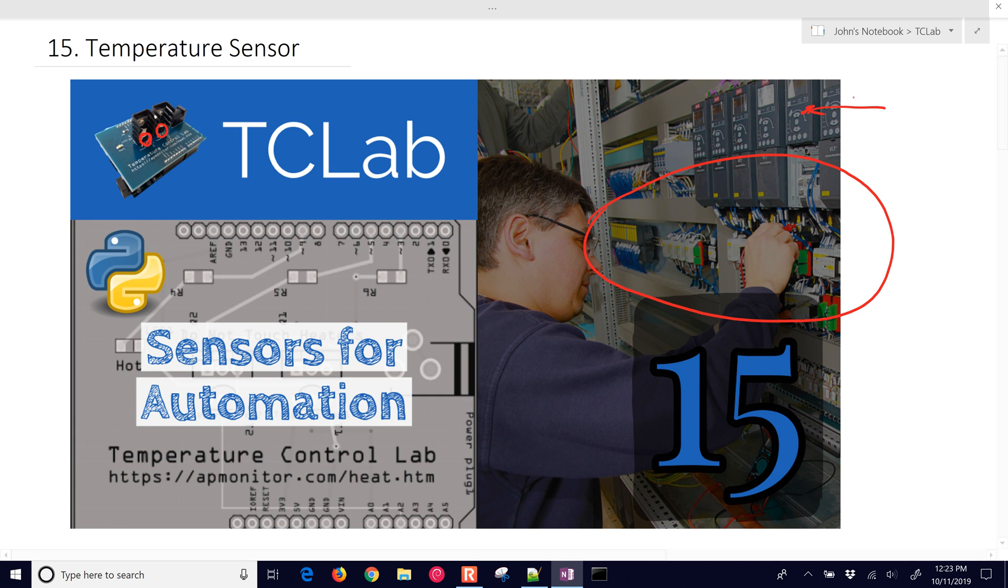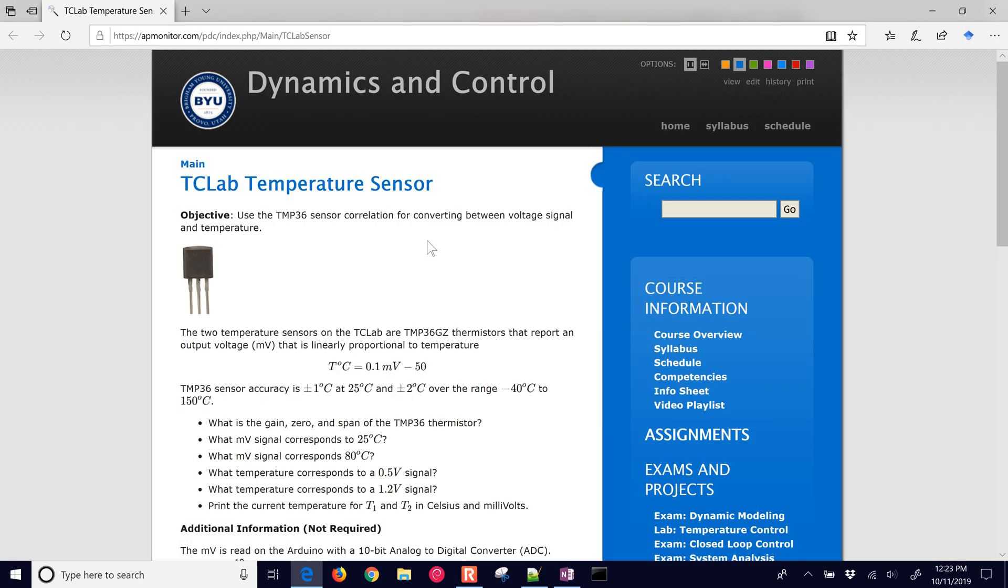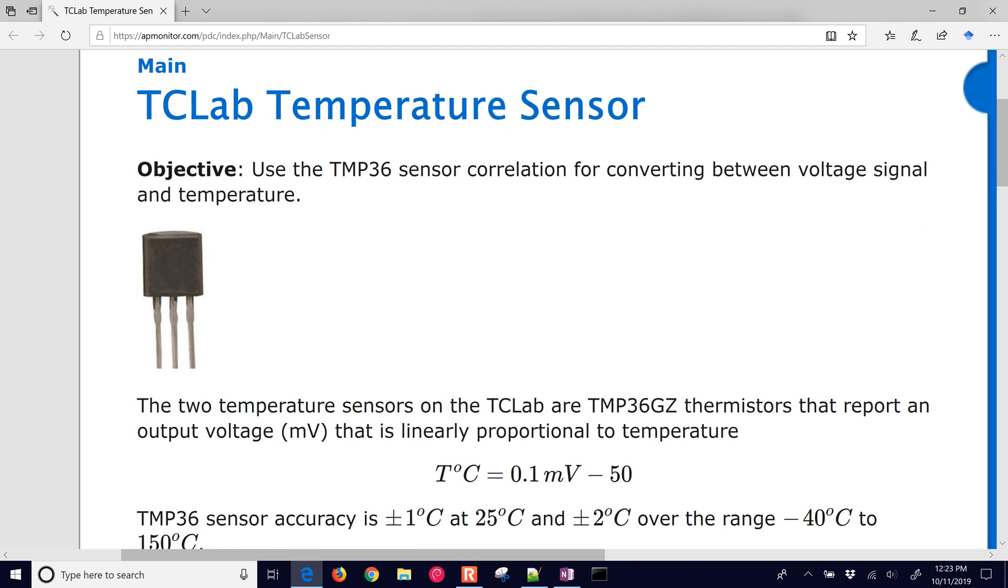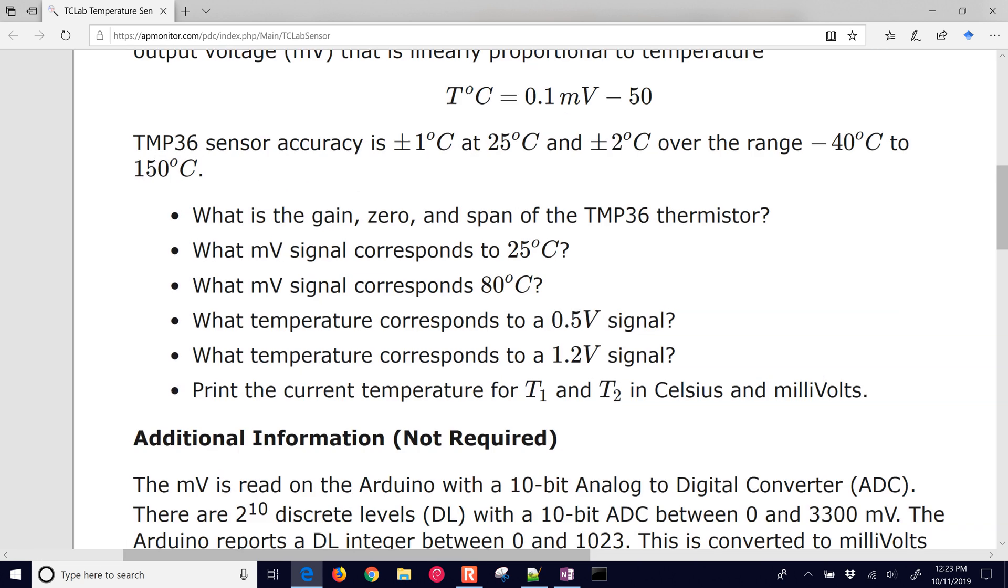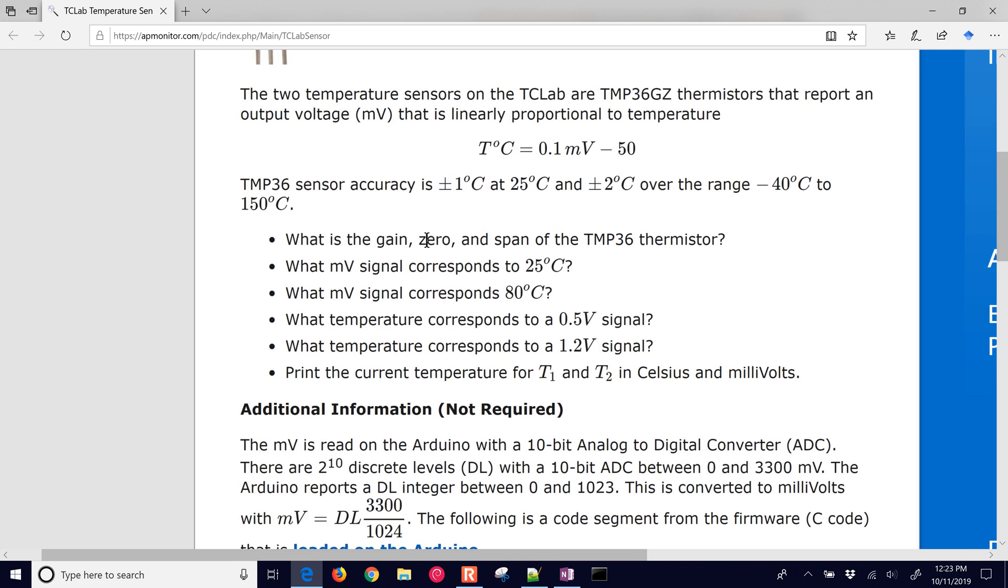We're talking about temperature today, in particular thermistors, the TMP-36 sensor that we use on the temperature control lab. If you select this link in the description below the video, you'll see more information and the source code for this assignment. We're going to go through these questions. What is the gain, zero, and span of the TMP-36 thermistor? And using some of this information, we're going to determine what the millivolt signal is, as well as what is the temperature with a given voltage signal.